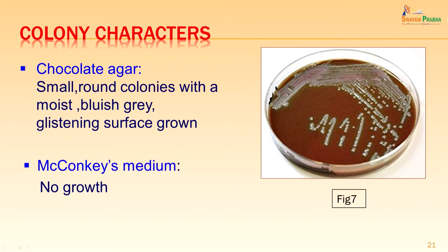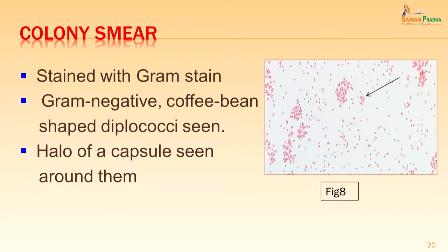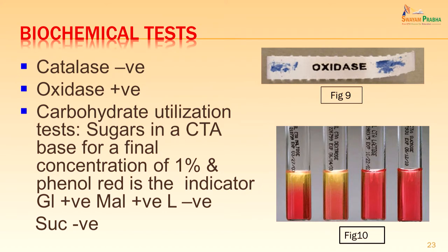A smear from the colony stained with Gram stain again showed gram negative coffee bean shaped diplococci, with a halo suggestive of a capsule around some of them. The colonies were then put for identification by biochemical tests. They were catalase negative and oxidase positive. The oxidase reagent contains tetramethyl para-phenyl diamine dihydrochloride; filter paper is dipped in this reagent and a little bit of colony is streaked across the paper — if oxidase positive, a purple coloration appears on the filter paper.